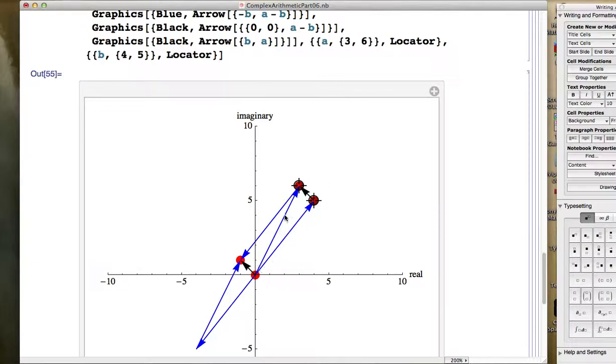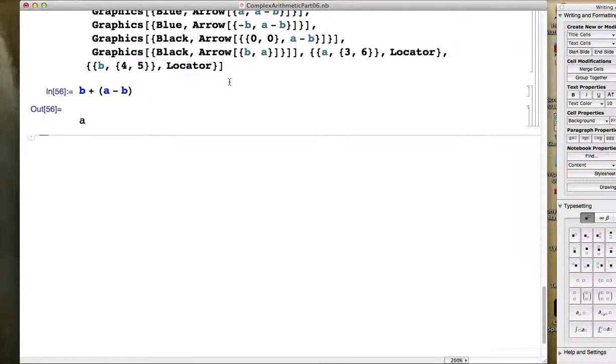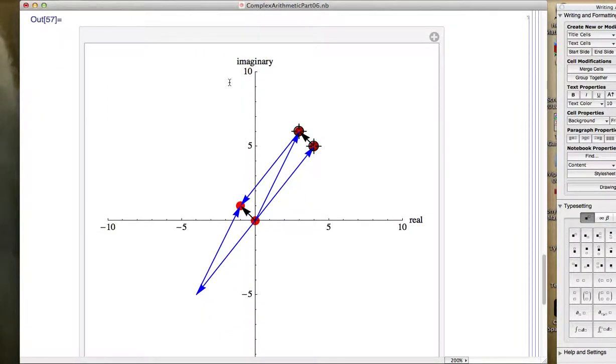Again, what is what? A is this arrow. B is this arrow. To draw a minus b then, you start at the tip of b and go to the tip of a. A way to think of that algebraically is if you take b and add a minus b, you're going to get a. You're going to be at the tip of a, as this illustrates. So that's what I wanted to get across in this video.